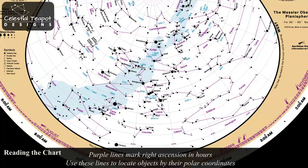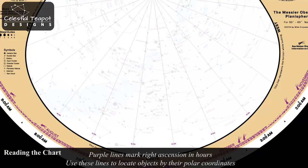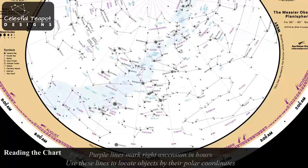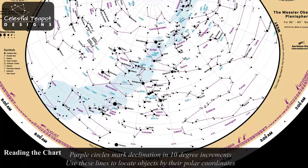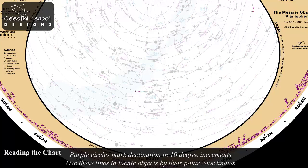The purple lines radiating out from the center of the chart mark right ascension in hours. Use these lines to locate objects by their polar coordinates. Correspondingly, purple circles mark declination in 10 degree increments.